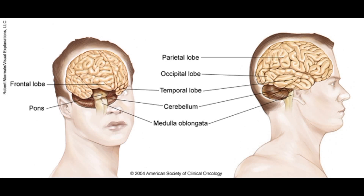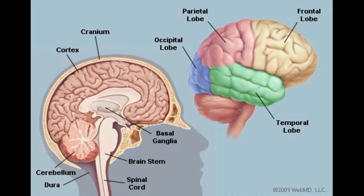The temporal lobe is separated from the frontal and parietal lobes by the lateral sulcus. The temporal lobe is associated with hearing, learning, visual memory and language. The occipital lobe is located at the rear of the cerebrum and is the visual processing center of the brain.